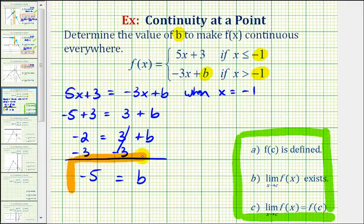So, when b is equal to negative 5, this piecewise defined function will be continuous everywhere. And the function rule, when x is greater than negative 1, would be negative 3x minus 5.